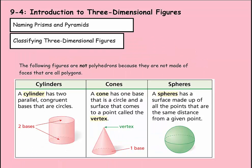Not all three-dimensional figures are polyhedrons. The following figures are not polyhedrons because they are not made of faces that are all polygons. A cylinder is kind of like a prism because it has two parallel circular bases, but it doesn't have any polygon faces — that's what makes it a cylinder. A cone looks like a pyramid except its base is circular, so it has no polygon faces and no distinguished faces either. A sphere doesn't have a base at all — it has a center point in the middle that all points are the same distance from.